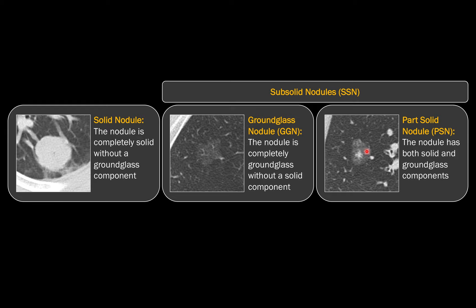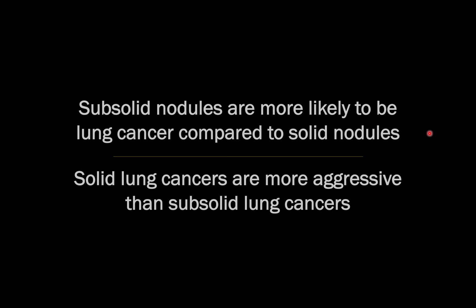When you have a subsolid nodule, it's important to say whether it's completely ground glass or part solid. Subsolid nodules are more likely to be lung cancer compared to solid nodules — if you had 100 subsolid and 100 solid nodules, you'd have more lung cancers in the subsolid group. On the other hand, solid lung cancers are more aggressive than subsolid lung cancers.